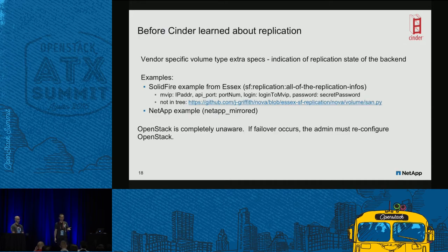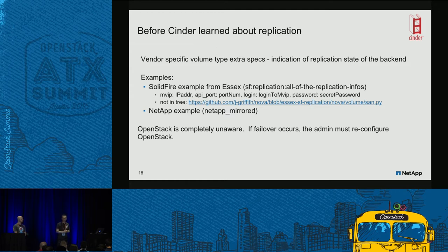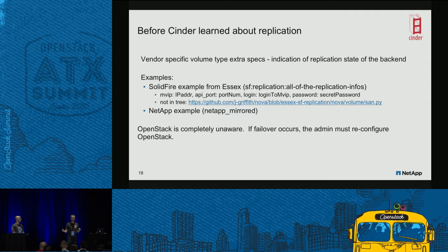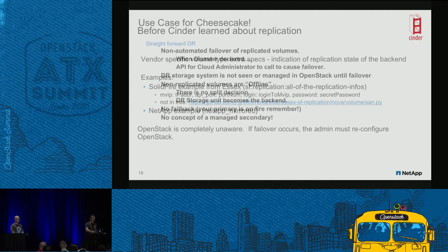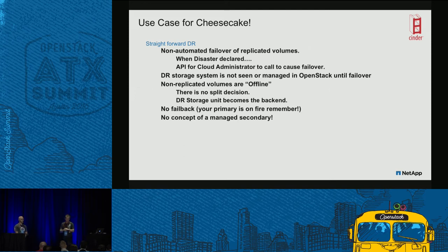Looking at what was wrong with the first design: for SolidFire in Essex, you put 'sf:replication' in the extra specs and some other variables, and replication just happened. But a tenant didn't know about it, OpenStack didn't know about it, and if there was a failure, you'd have to go flip things on the array and then reconfigure OpenStack to the secondary side manually. The NetApp example used 'netapp_mirrored' as a keyword in the driver — that one is actually in tree. Unlike the Tokyo design, which had managed and non-managed secondary options that became challenging, Cheesecake goes for a very simple, specific approach.